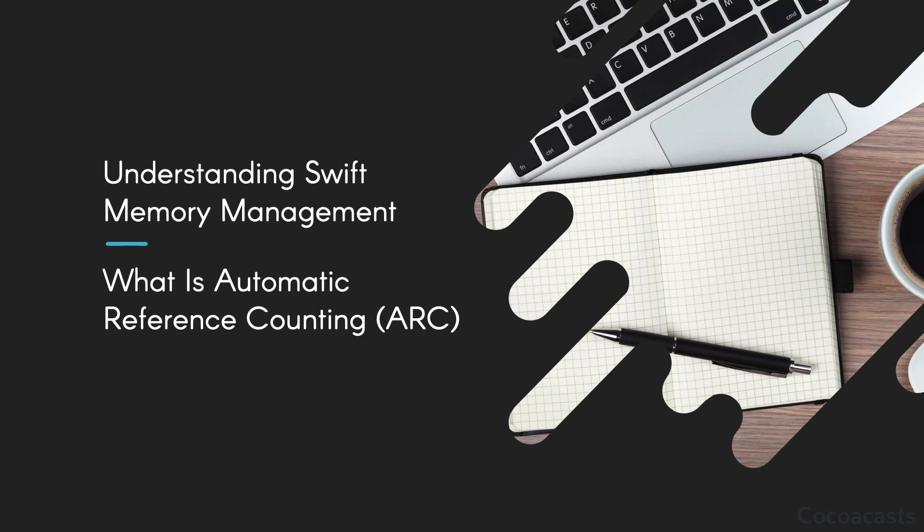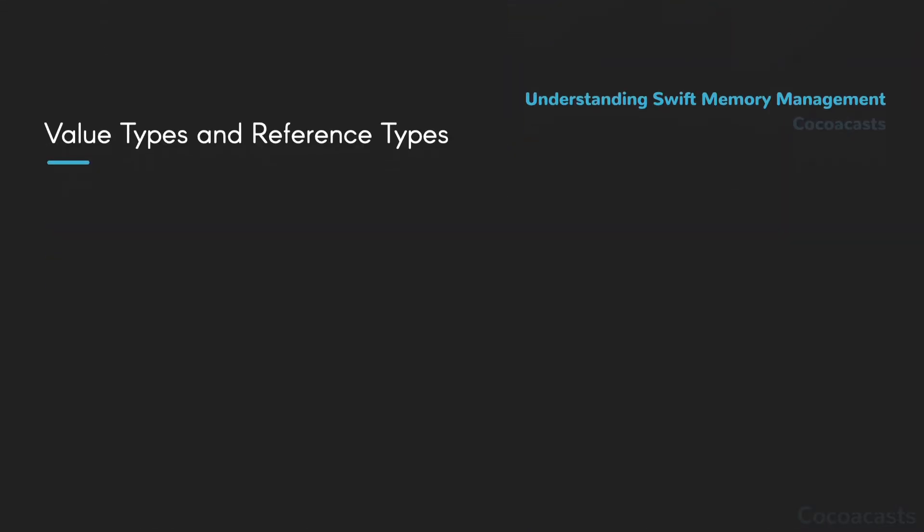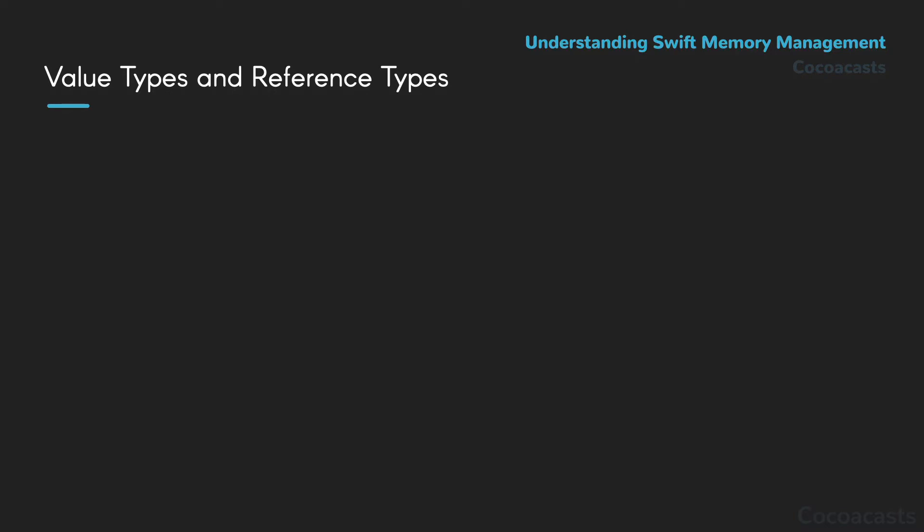Before we can discuss Automatic Reference Counting, ARC for short, you need to understand the differences between value types and reference types. You are probably already familiar with classes. Most object-oriented programming languages define classes. Unless you have experience with C or Objective-C, structures may be new to you. Even though classes and structures are similar, they differ in a number of key aspects.